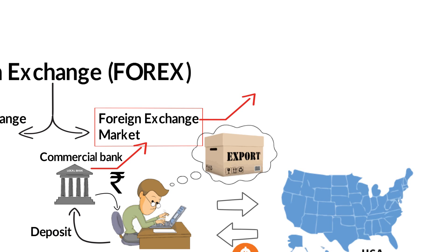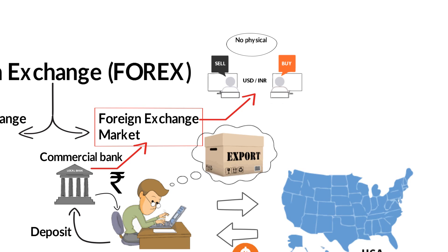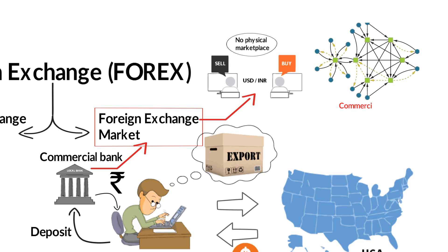The local commercial bank will then go to the foreign exchange market for currency conversion. The foreign exchange market is a market where the currency of one country is traded for the currency of another. But there is no physical marketplace — it's a huge network of large commercial banks, investment banks, foreign exchange brokers and dealers spread across the globe, interconnected through telephones and computers. All currency conversion transactions happen electronically, not by any physical mode.